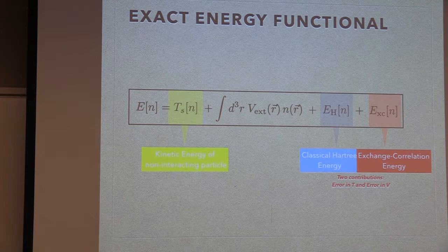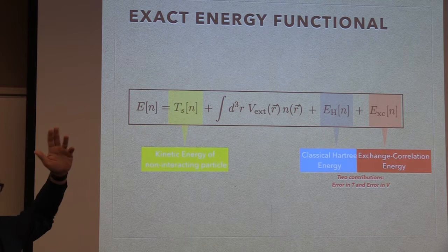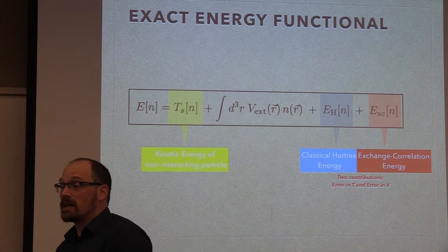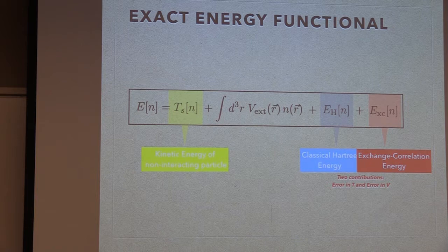What physicists have been doing since the '60s — and it has accelerated a lot since the '80s and '90s — is trying to understand how to calculate the exchange-correlation term. People who have been involved are usually theoreticians trying to find constraints on that particular form and building approximations that fulfill those constraints.